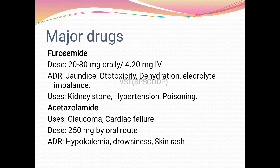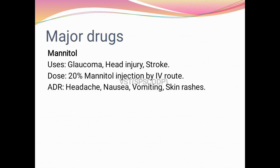Major diuretic drugs: Furosemide — dose 20-80 mg orally or 4-20 mg intravenously; adverse drug reactions include jaundice, ototoxicity, dehydration, electrolyte imbalance; uses include kidney stone, hypertension, poisoning. Acetazolamide — used for glaucoma to reduce intraocular pressure and cardiac failure; dose 250 mg oral; ADR: hypokalemia. Mannitol — used for glaucoma, head injury, stroke; dose 20% mannitol injection intravenously; ADR: headache, nausea, vomiting, skin rashes.